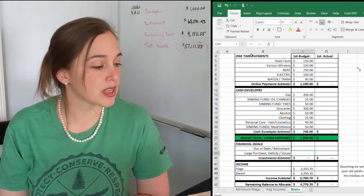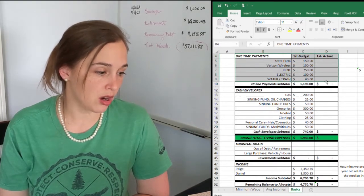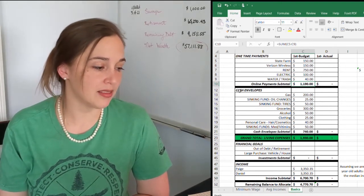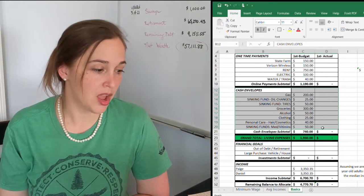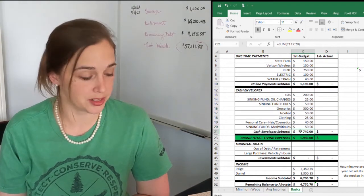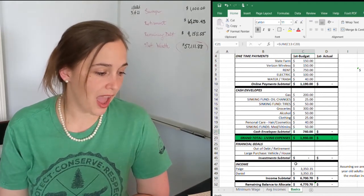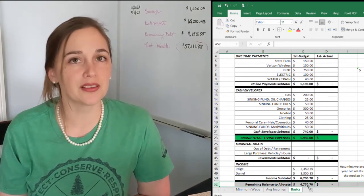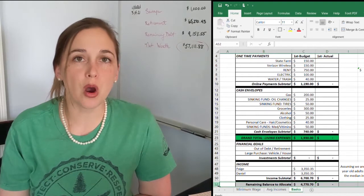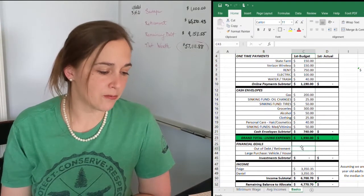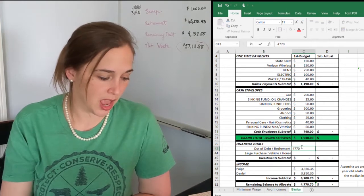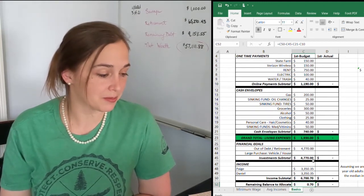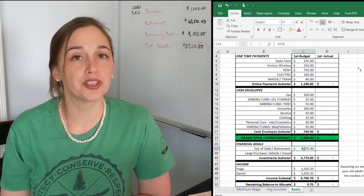If you look on this spreadsheet, you will see the one-time payments are a total of $1,190, and the cash envelopes are also plugged in here for a total of $740. So when you take that out of our income, the remaining balance to allocate is $4,770. So if you are in debt, you are going to take that $4,770 and plug it right there into your debt. You don't have much left in the balance to allocate because it is all taken up with your debt servicing.